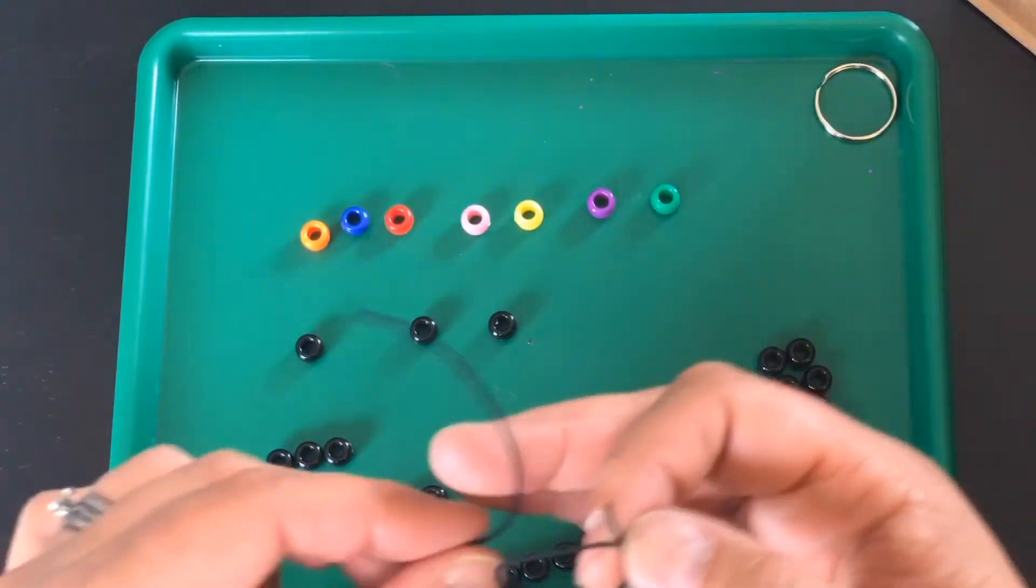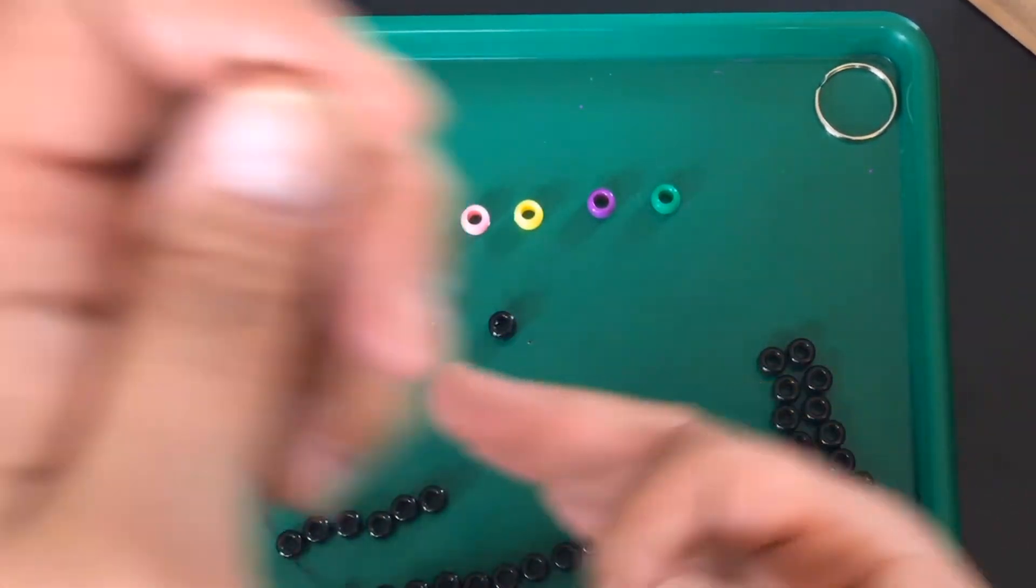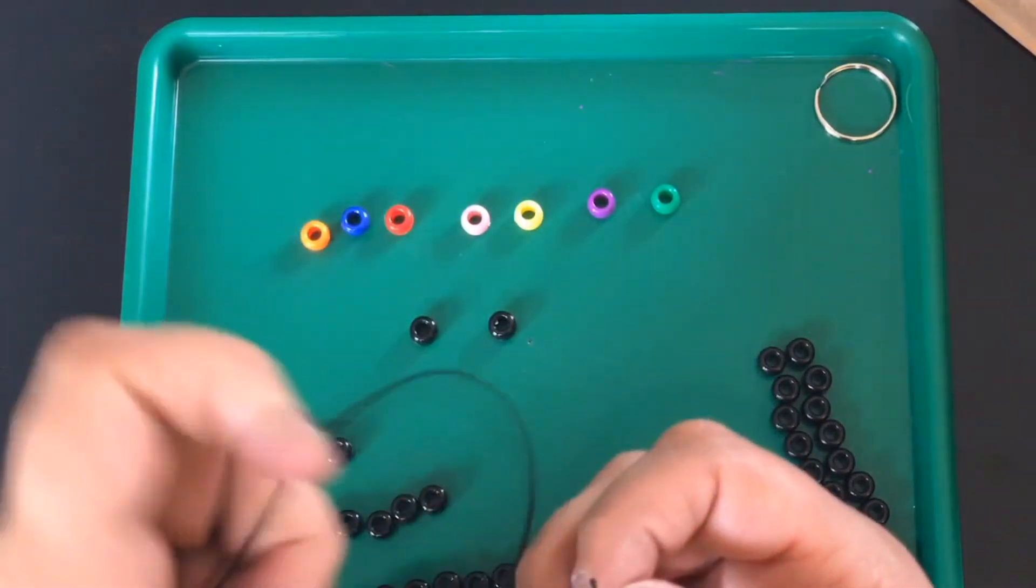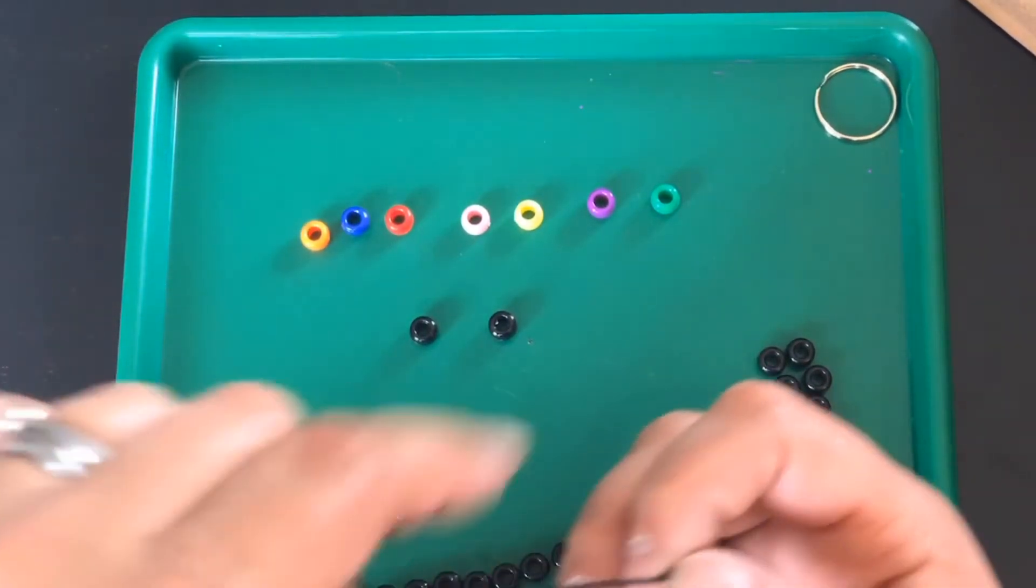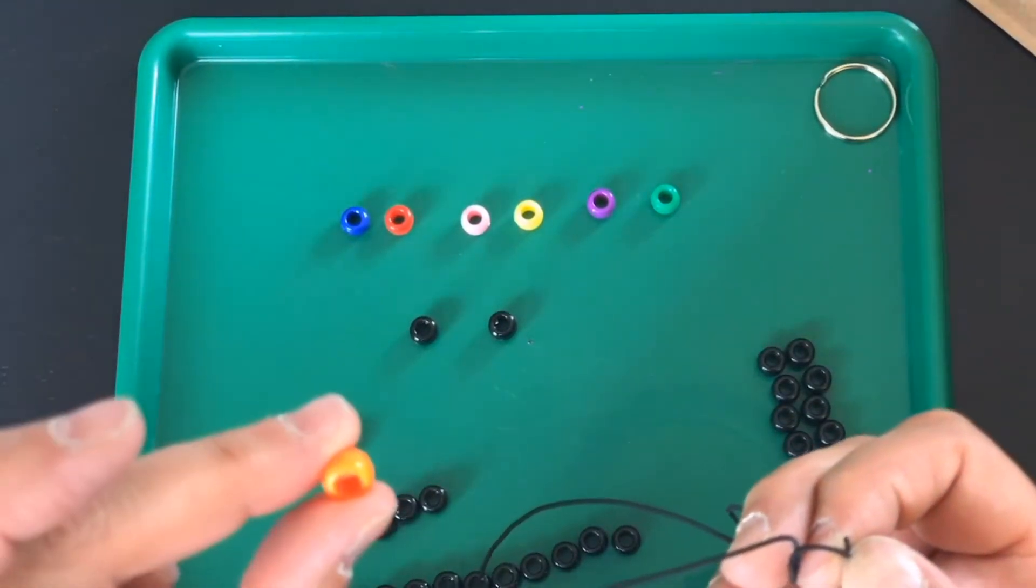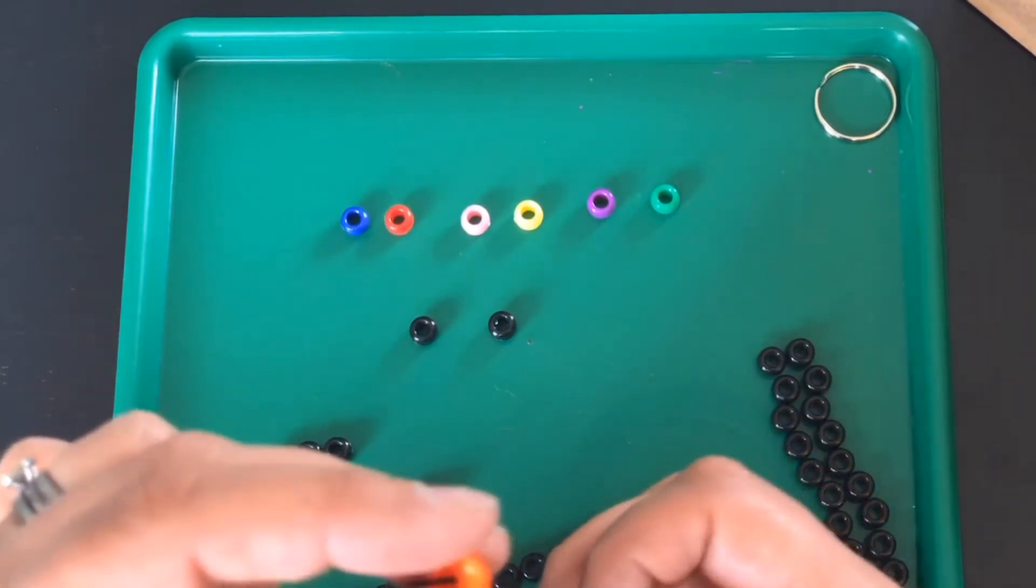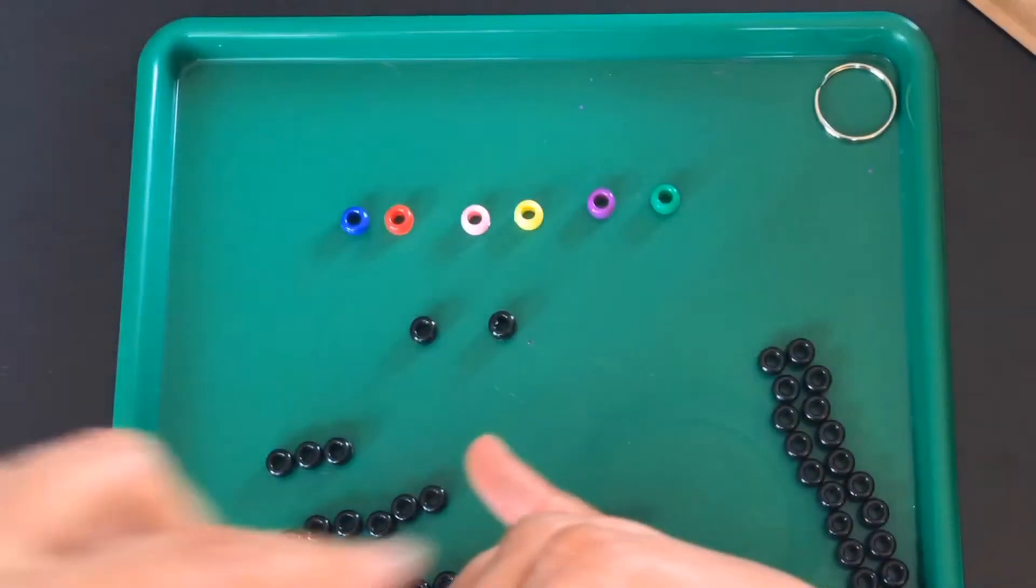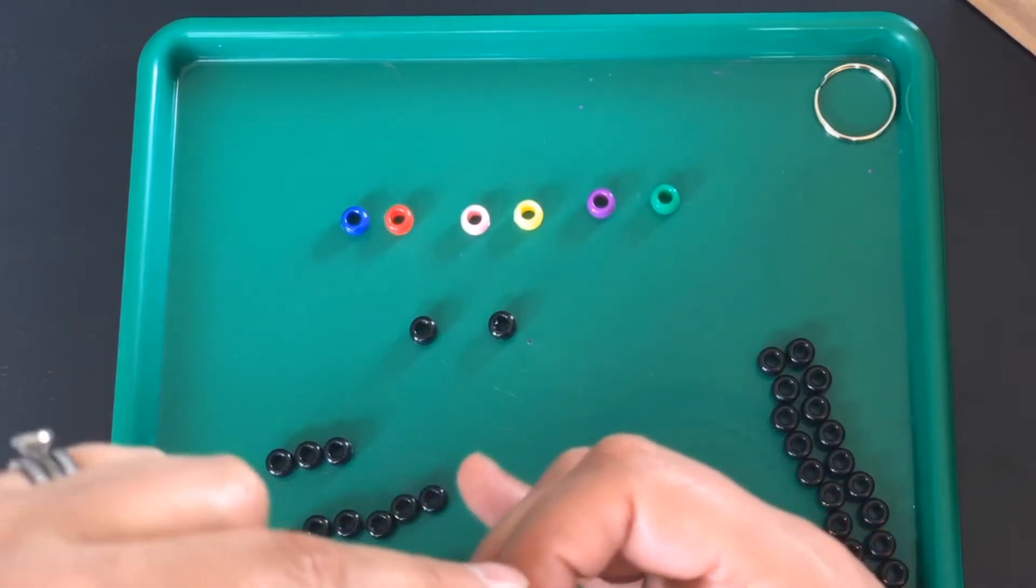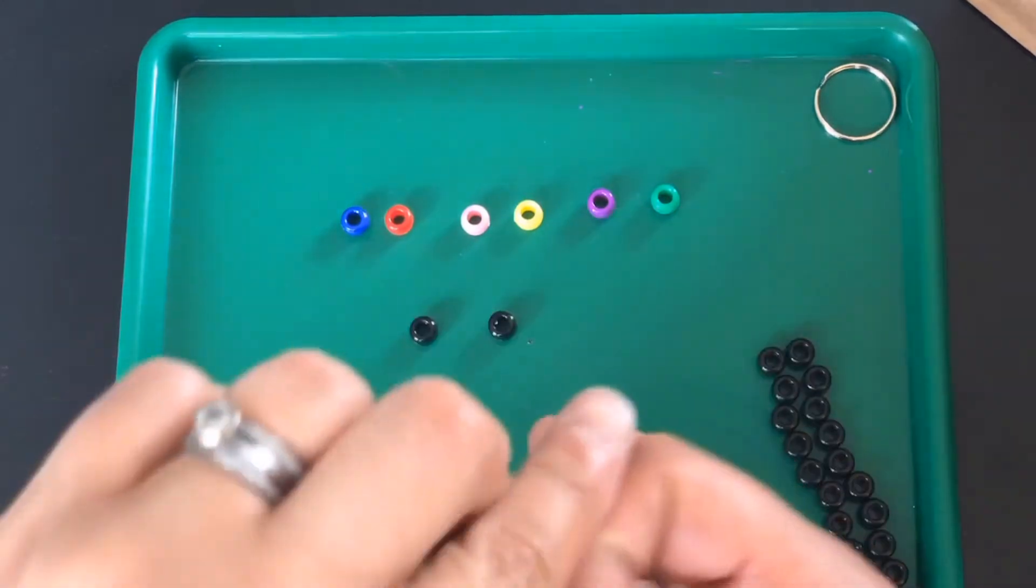The brown bead is Mercury. Then I'm going to take another black bead and string it on. This is the distance between Mercury and Venus, which is the next bead, the orange bead. This is representing Venus. So I'm going to slide Venus on.